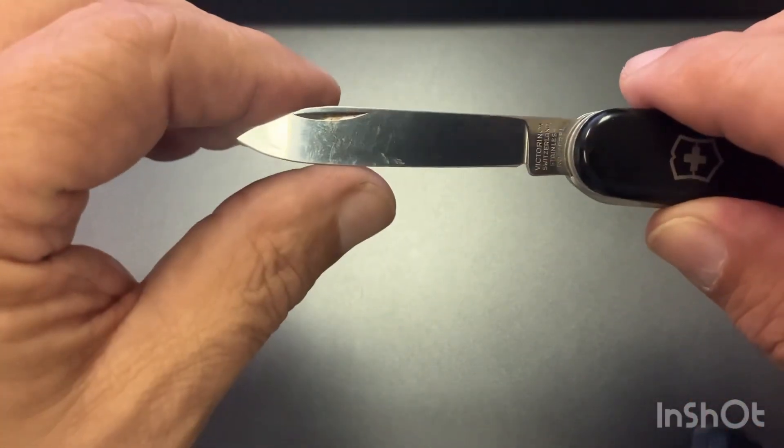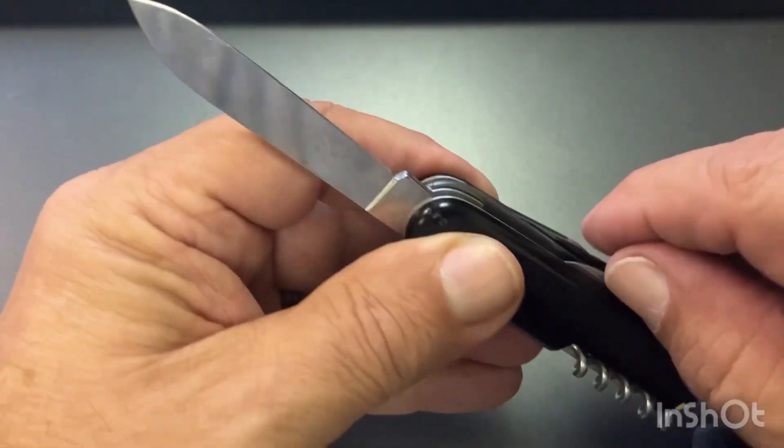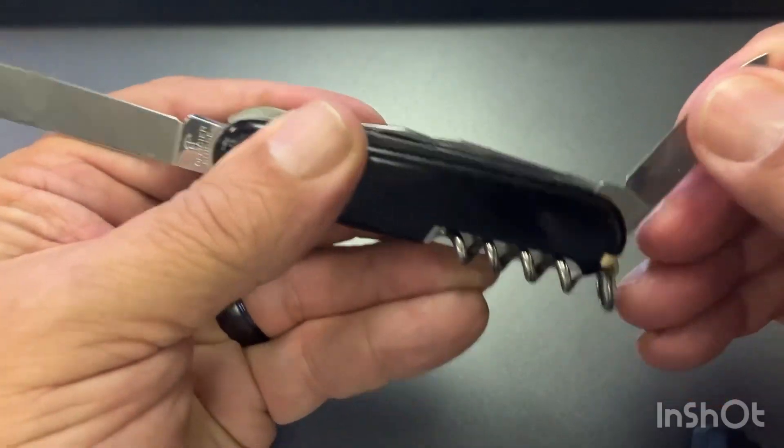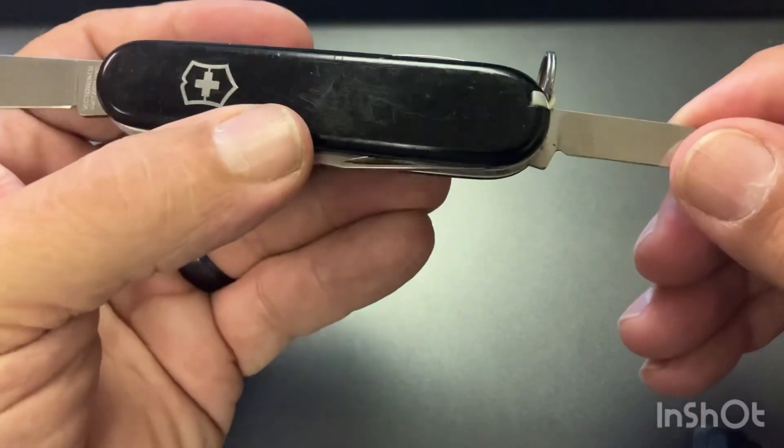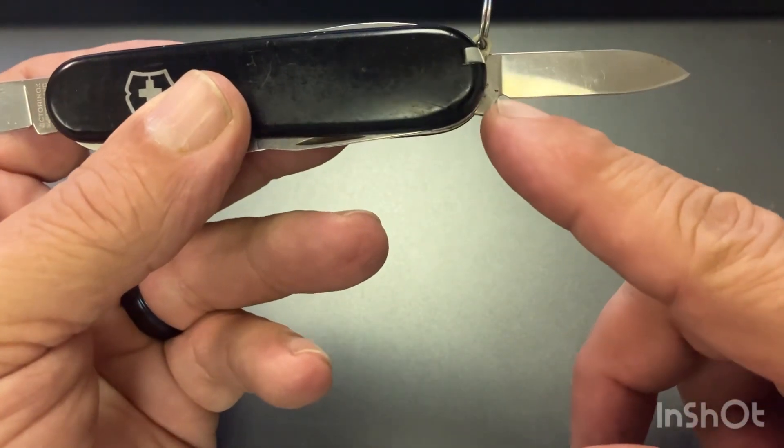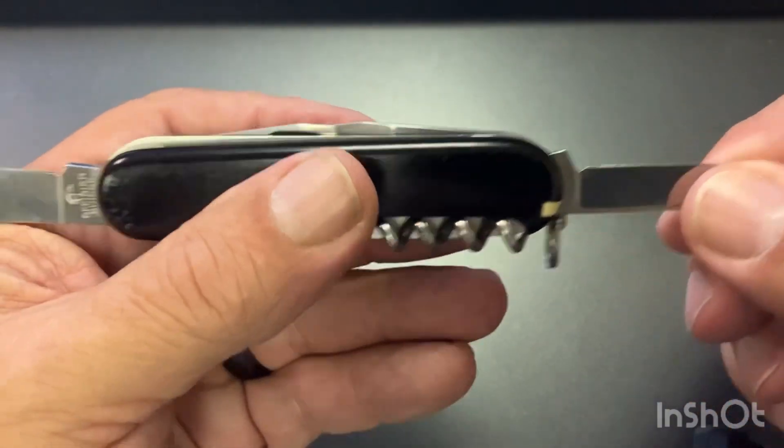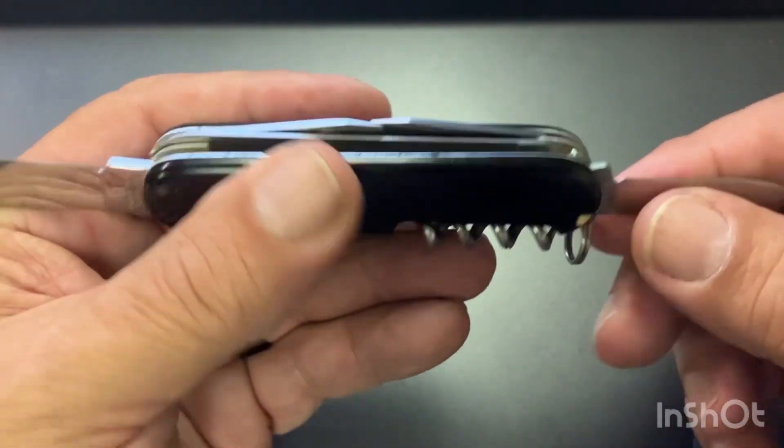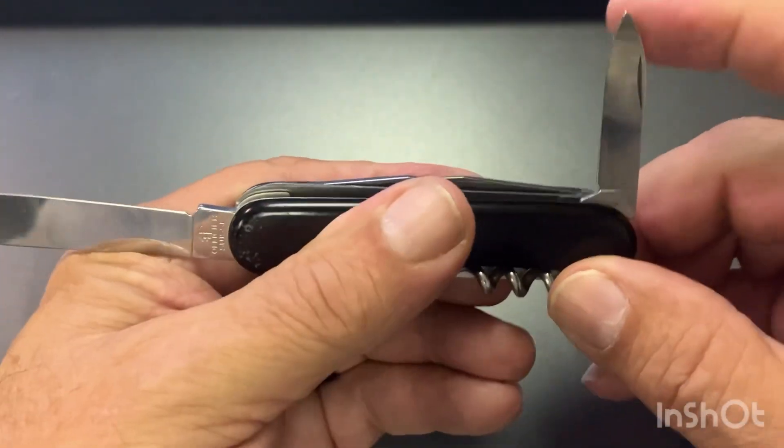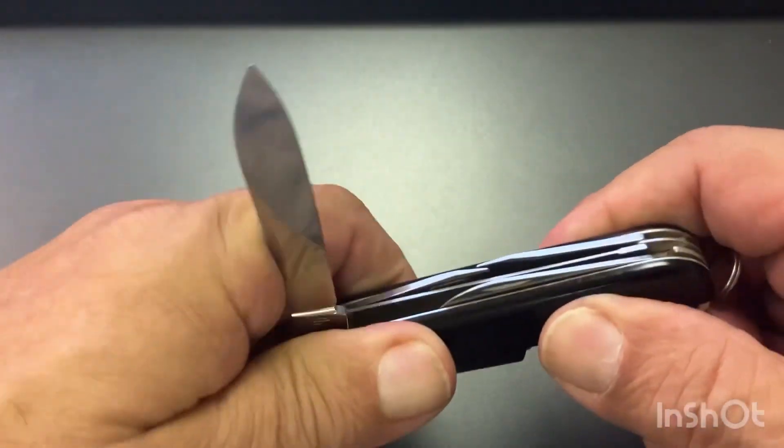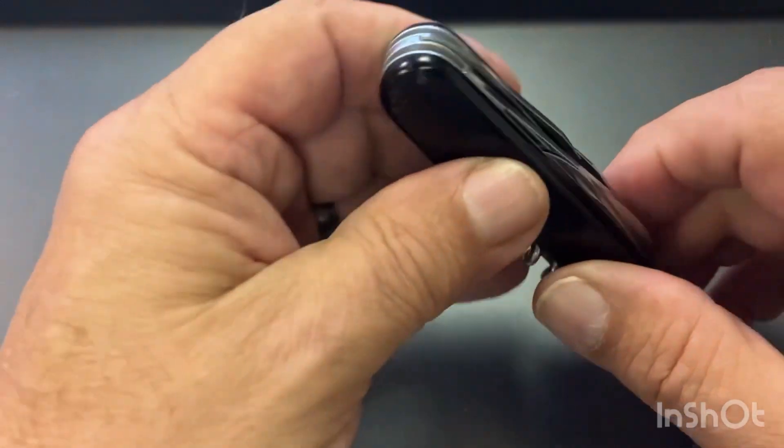And then you have a pin blade right here, which is about an inch and a half from tip to tang, so from here to here is about an inch and a half. These are great for doing things where you need more control. So, it's got a nice snap to it.